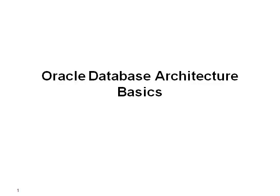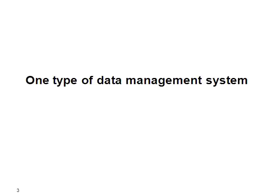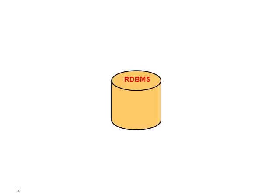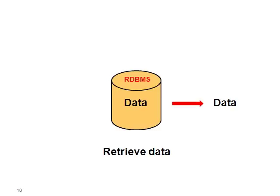Hello and welcome to this presentation about Oracle Database Architecture Basics. To quickly define what is an Oracle Database: it's one type of database management system called a relational database management system. With that RDBMS you have data that you can insert into that system. Once they are in your system you can modify your data, which means you can update them or delete them, and essentially the last thing you can do is to retrieve the data. So three functionalities: insert, modify, and retrieve.